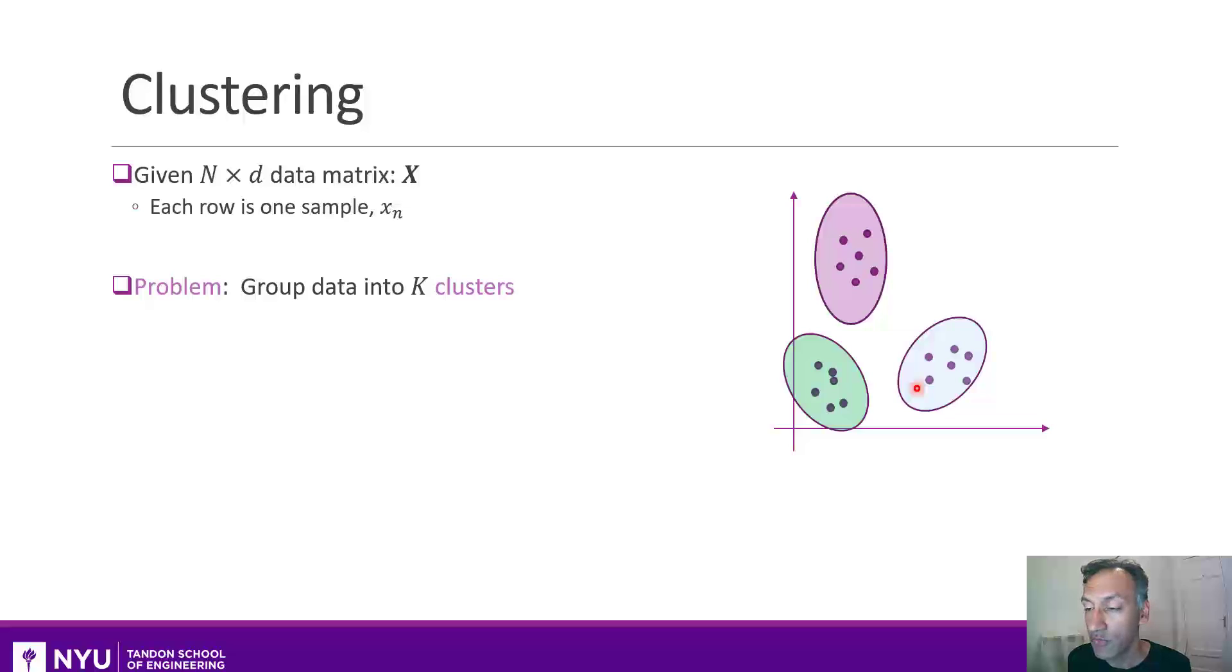This is easy to do visually for humans. The question is, can we get a computer to automate this when it's in much higher dimensions? Now, just some notation here. What we mean mathematically is that for each point, we want to assign each point to some cluster. And we'll call that assignment by sigma sub n. So sigma sub n will be a number from 1 to k.